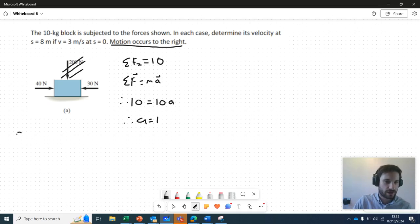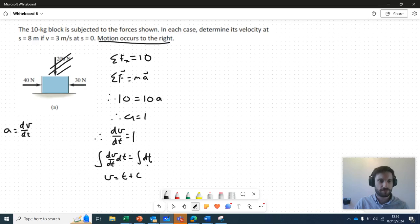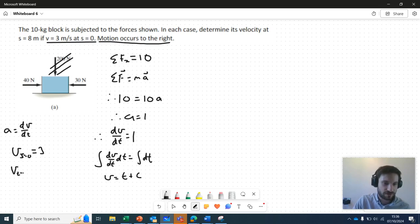Using this idea that A is equal to the derivative of velocity with time, we can rewrite this. We can say that dV over dt equals 1. We can integrate both sides of this with respect to T, which gives us that V is equal to T plus C. So I've done the integration there. Now it states in the problem that V is equal to 3 at S is equal to 0.